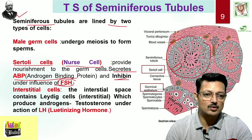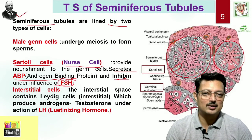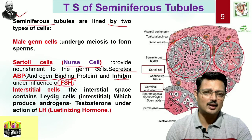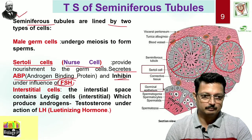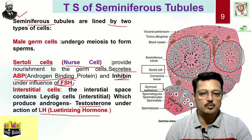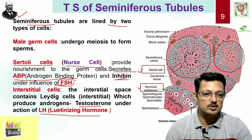In between the seminiferous tubules, there are also special cells called interstitial cells — the space between two compartments, just as you put marbles in a glass and there is interstitial space between them. These cells are called Leydig cells, and they produce testosterone. They are under the control of the pituitary hormone luteinizing hormone (LH), which controls the activity of these interstitial or Leydig cells. So inside the seminiferous tubule you find germinal epithelium and Sertoli cells, while in the spaces between the tubules you find interstitial cells.